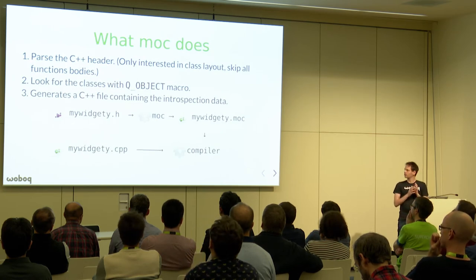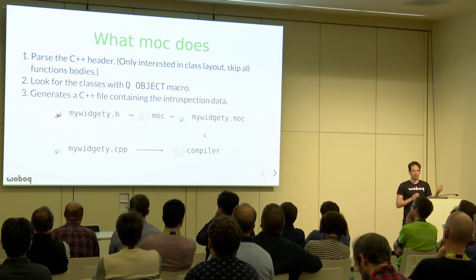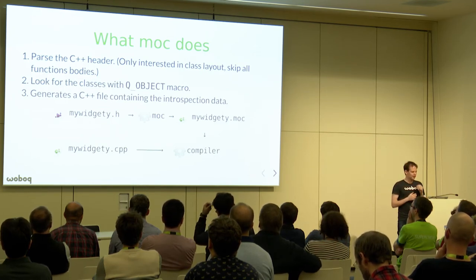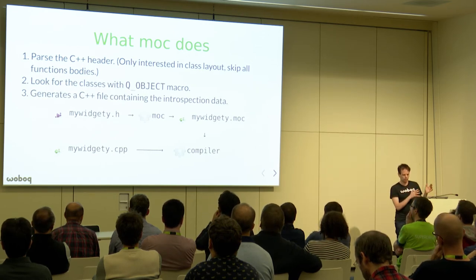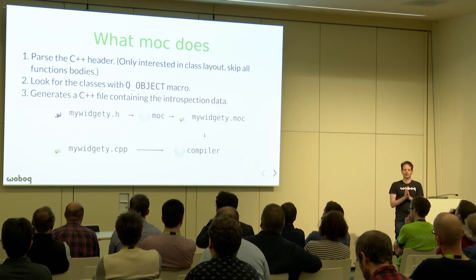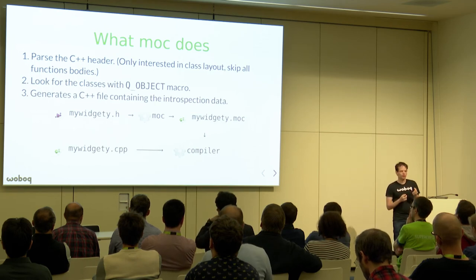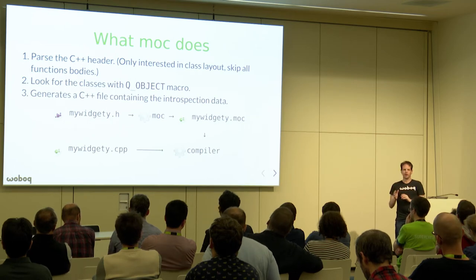MOC parses the C++ header and is only interested in the layout of the class — which are the properties, which are the signals, and the slots. It looks at those classes and generates all the data: the introspection data and all the data needed for signals, slots, and properties to work. Importantly, MOC does not rewrite your code; it writes additional code that is compiled together with your code.